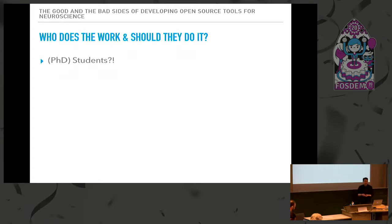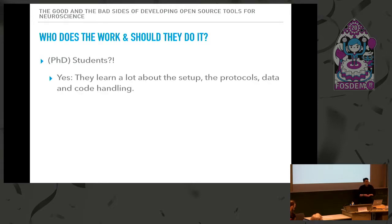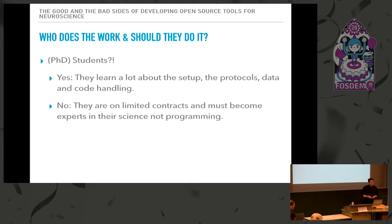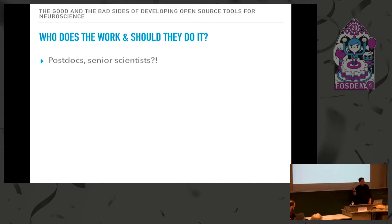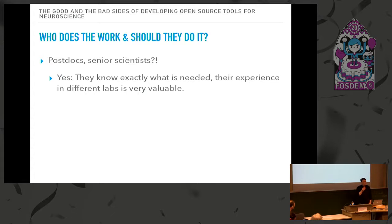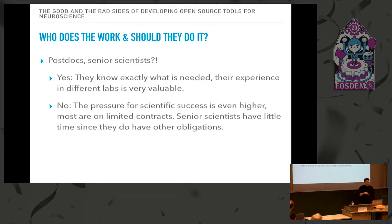So who does the work and who should do it? Should it be PhD students? There's a pro: yes, they learn a lot about the setup, the protocols, and data handling, and they improve their programming skills. On the other hand, they are on limited contracts and must become experts in their science, not necessarily in programming. Should it be postdocs or senior scientists? They know exactly what they want, and when they've visited different labs they have a broader spectrum. But the pressure for scientific success is even higher, and most are again on limited contracts. Senior scientists have little time due to other obligations.